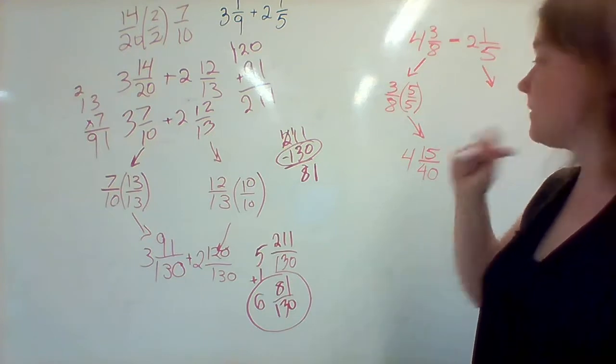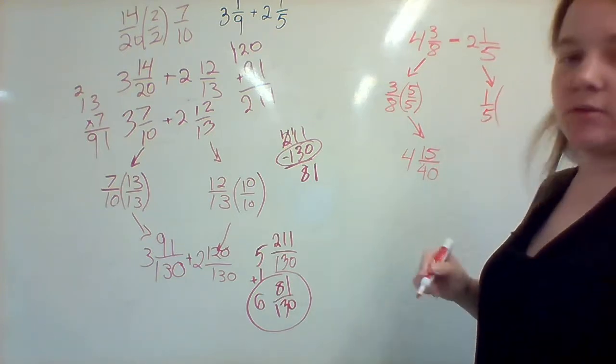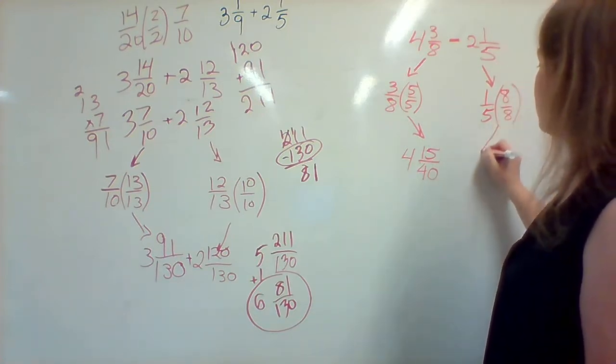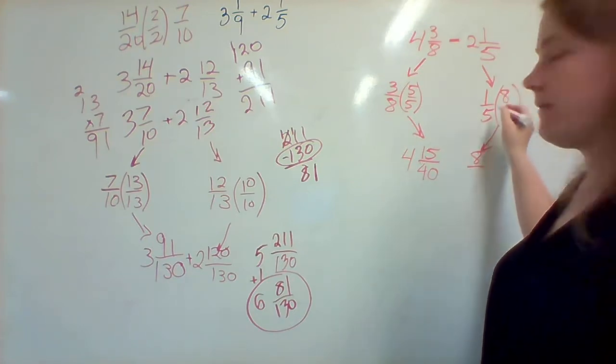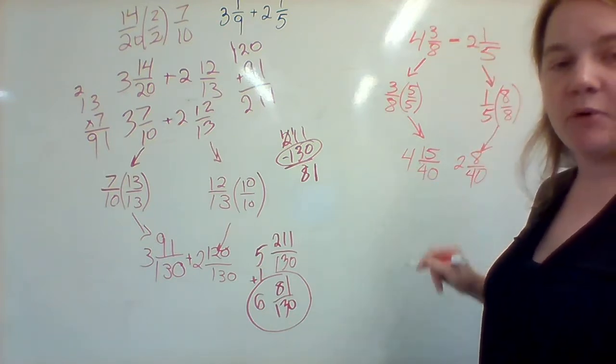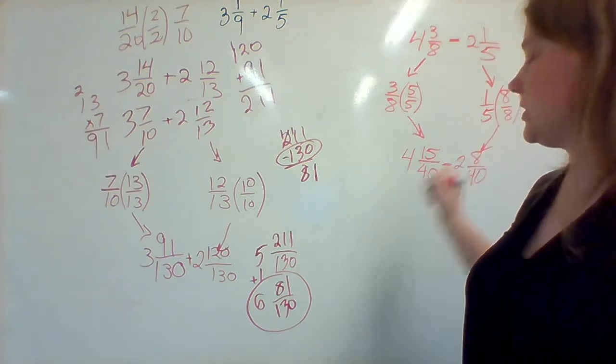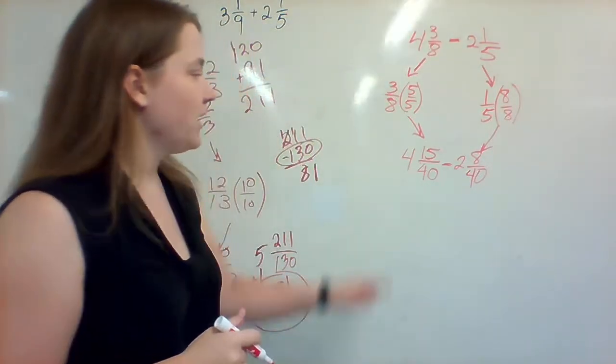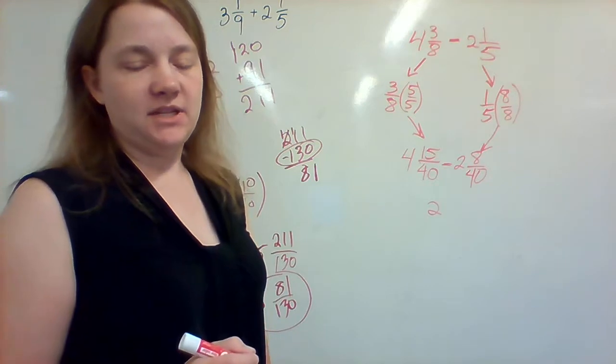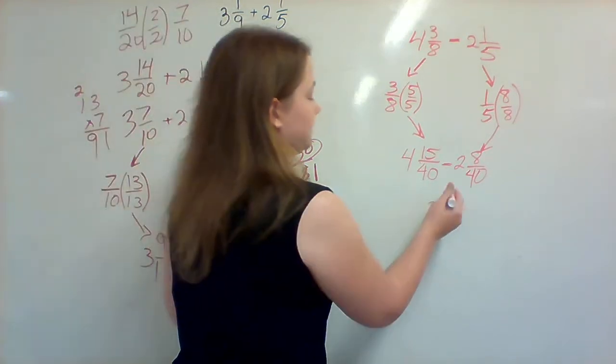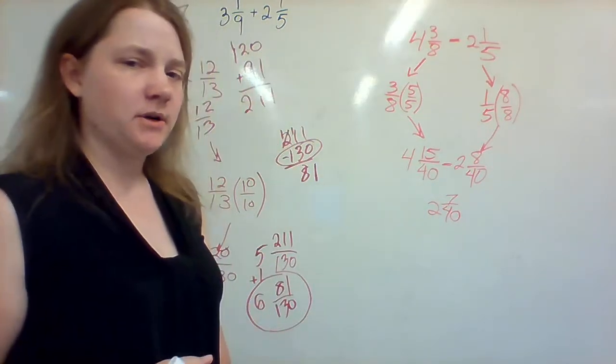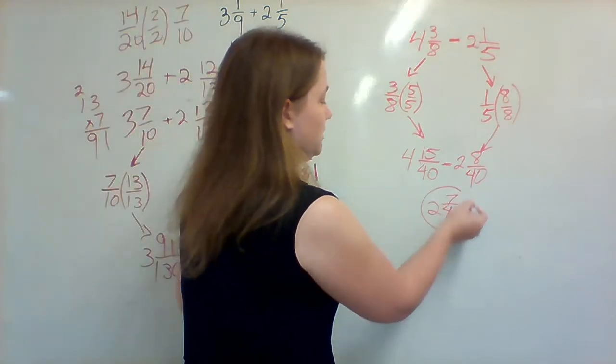Now I'm going to take out the 1 fifth and multiply it by the other denominator, which is going to be that 8. 1 times 8 is 8, 5 times 8 is 40. Then I'm going to take down that 2. And now that I have both of my numbers, I know that I'm going to take down the subtraction sign. Now all I need to do is do the subtraction. 4 minus 2 is 2. 15 minus 8 is going to be 7. And then I have 40 on the bottom, so that stays the same. 7 can't go into 40, so that can't be simplified. So that's going to be my final answer.